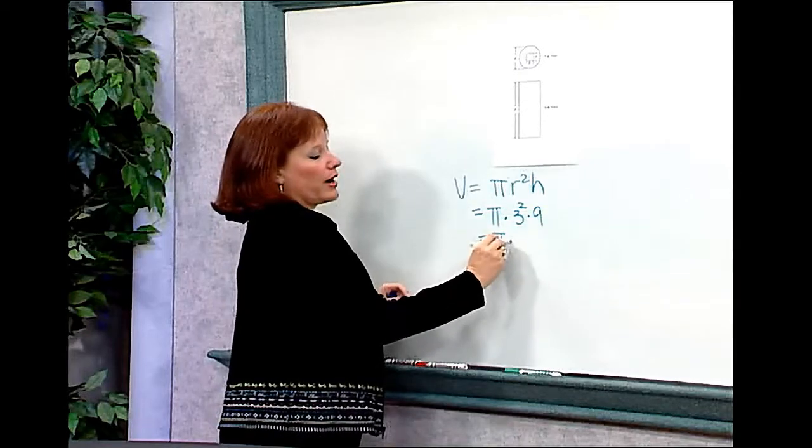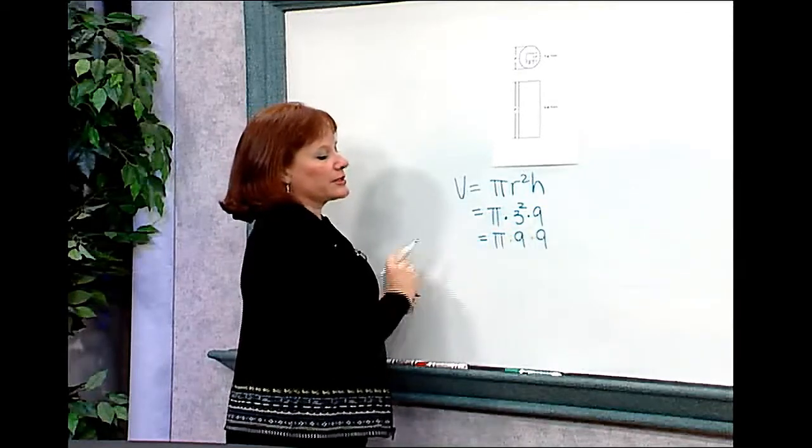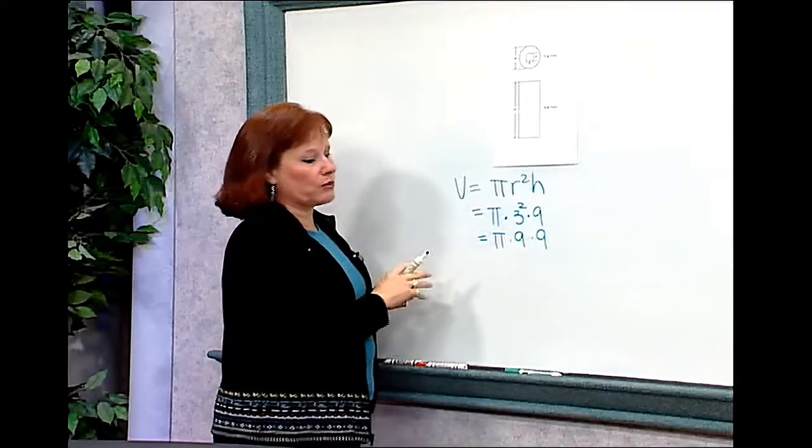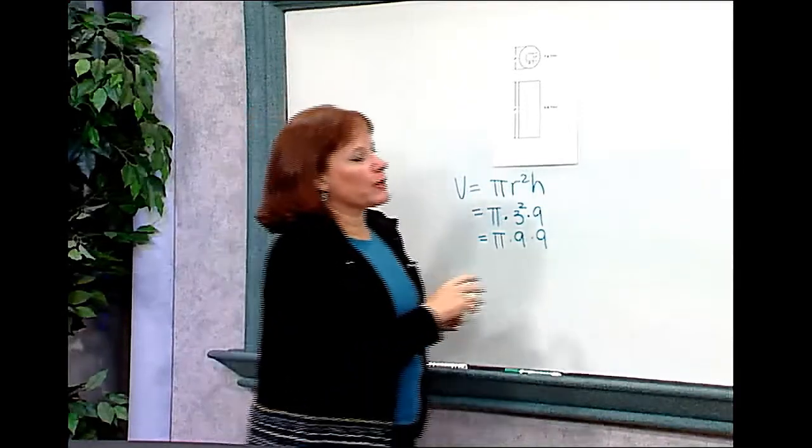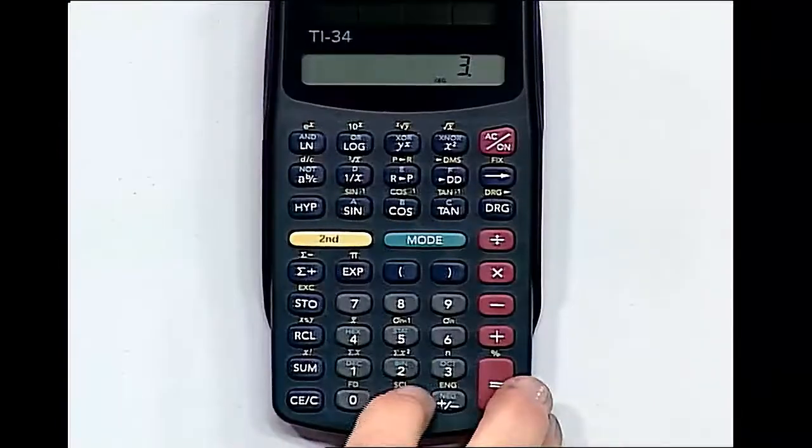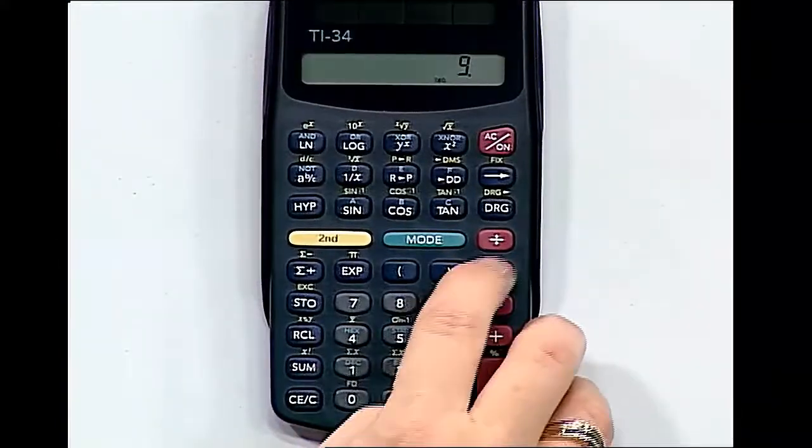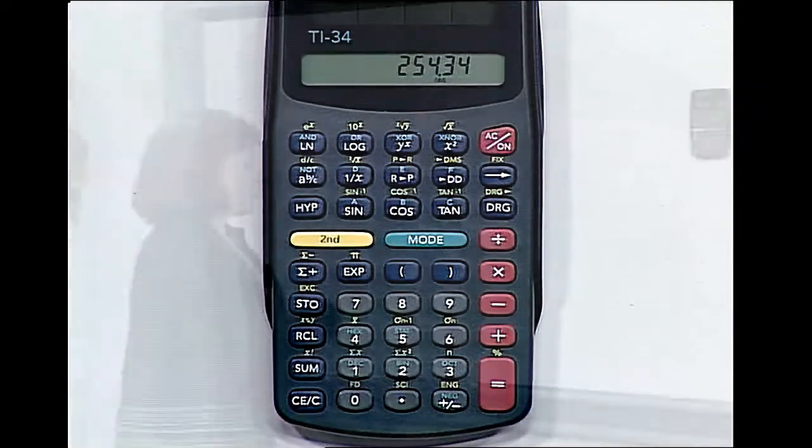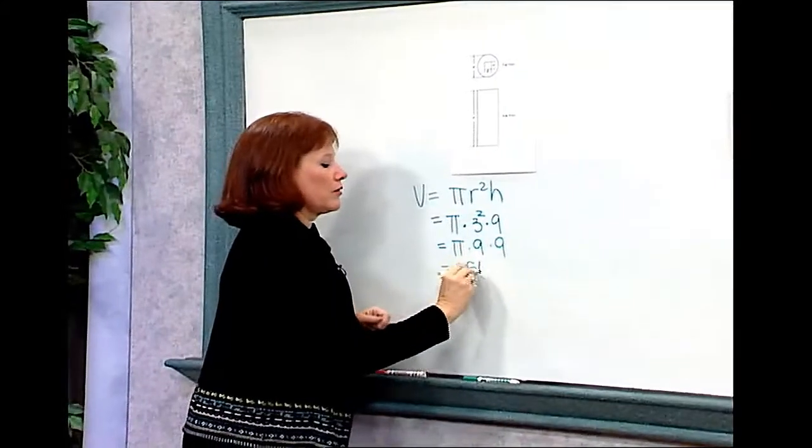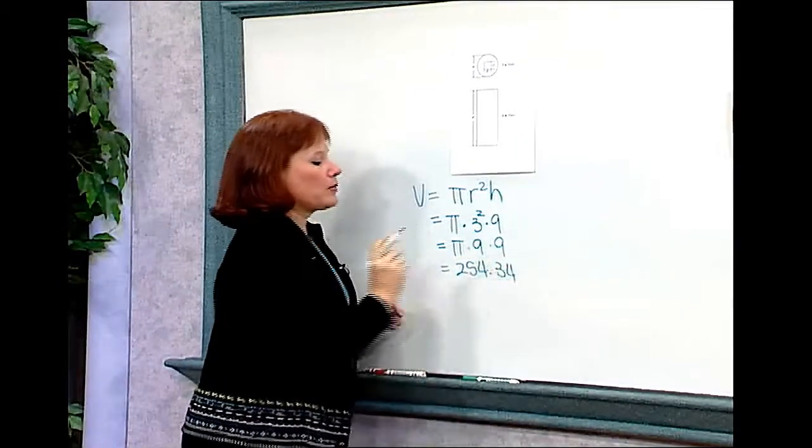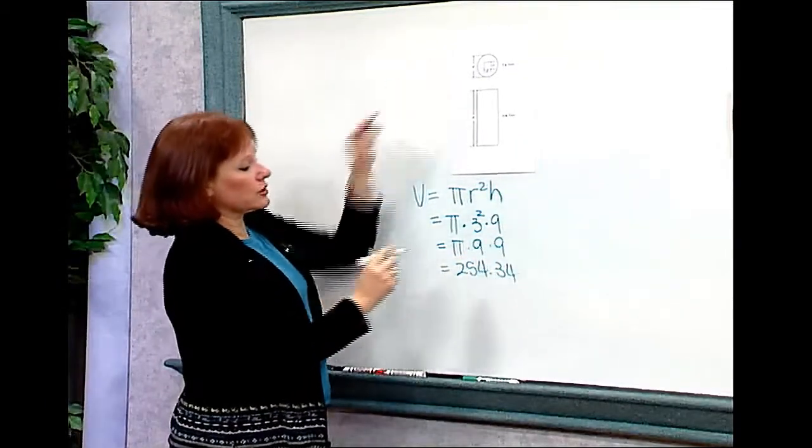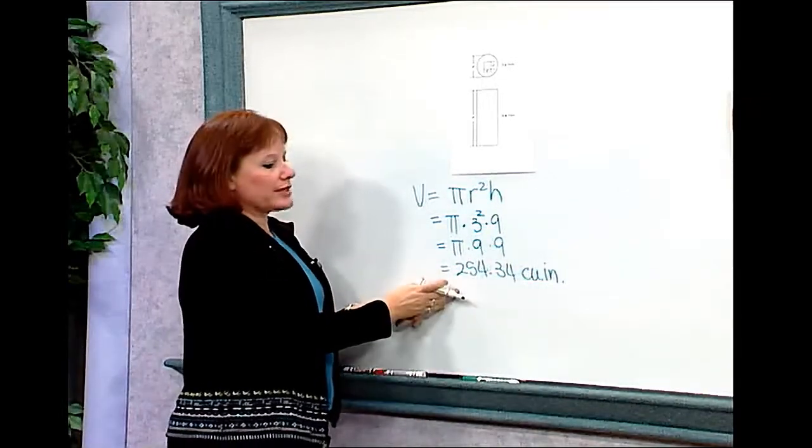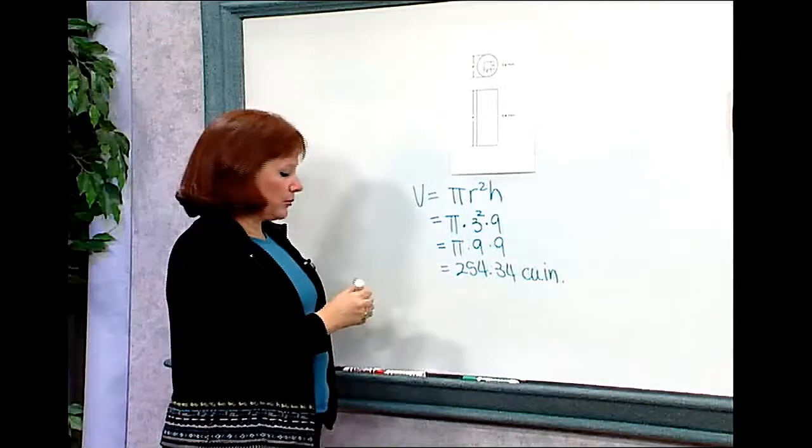In other words, I have pi times 9 times 9. This tells me how much plastic would be used if this were a solid figure rather than one with a hole in it. I'll use my calculator, and I'll multiply 3.14 times 9 times 9, and I'll get a total volume of 254.34. And I want to remember to check my figure, and I see that it's in inches, so 254.34 cubic inches. That's how much plastic would be used if this were a solid piece.